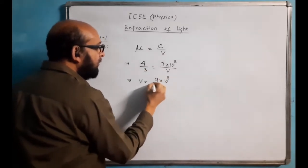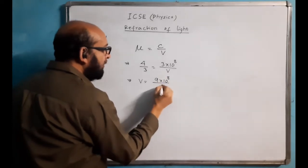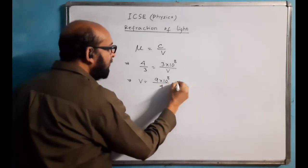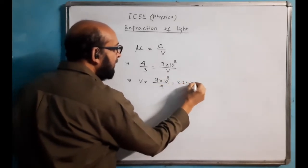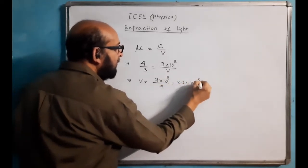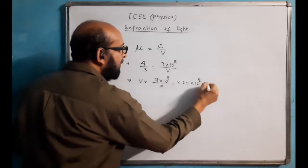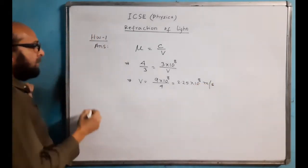3×10⁸ divided by 4 gives the answer 2.25×10⁸ meters per second.